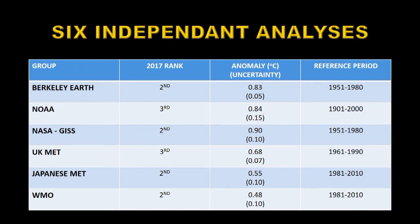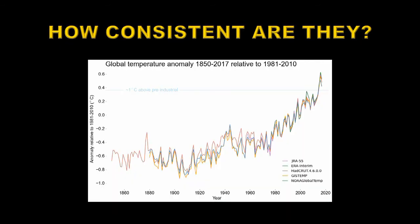This accounts for the differences in the anomaly shown in the second column. The later ones, like the Japanese Met and World Meteorological Organization, use a much later period for their reference, which includes a lot more of the recent global warming, so their anomaly is lower than some of the earlier ones. When they come to rank them against other years, they find that 2017 is either the second or the third warmest year. To find out how consistent they are, we have to reduce them all to the same reference period — here compared to the 1981 to 2010 period. When you do that, all the results come into line with one another, and for the last 40 or 50 years they're almost identical. Even going back to the historical data, they're pretty good within 0.1 or 0.2 of each other. So this really says that the analysis is solid.